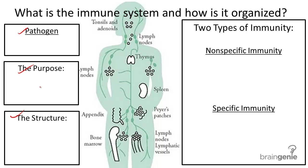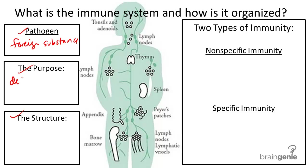A pathogen is any foreign substance that can cause a disease in the body — so anything that can cause a disease. The purpose of the immune system is to defend the body against pathogens, so we'll put defense.